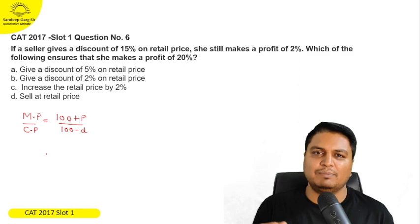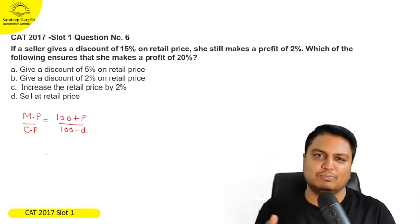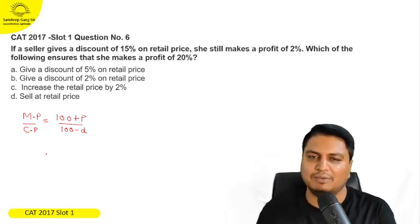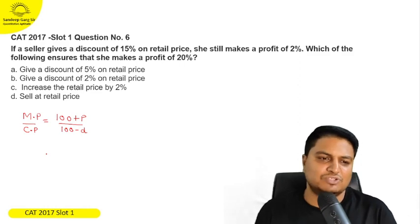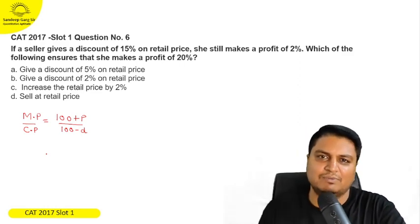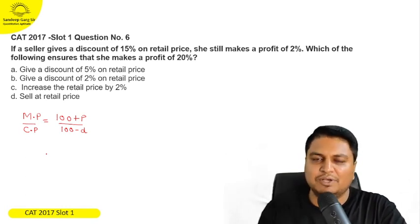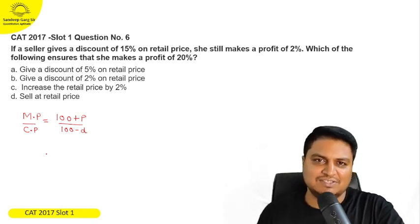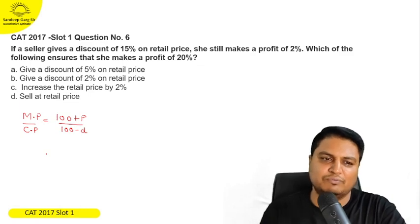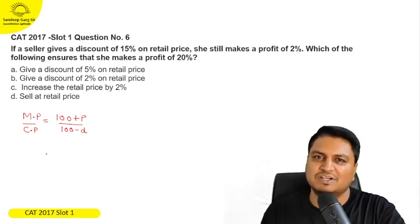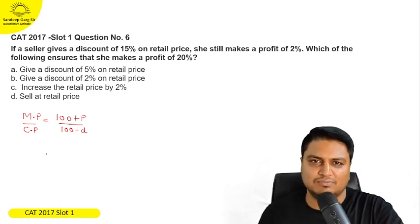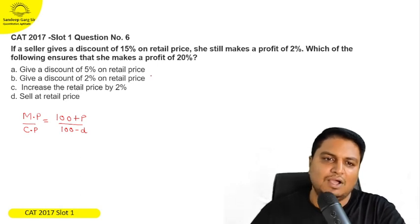Now, if we have to reach the formula, this formula is completely derived. I will tell you, but first of all, let's see the formula. And what happens in this one? MP denotes marked price or retail price, CP denotes cost price, P profit percent and D discount percent. You don't have to show the percentage.